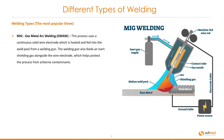We're going to be looking at the most popular three types of welding. Let's start with MIG. MIG stands for Gas Metal Arc Welding or GMAW. This process uses a continuous solid wire electrode which is heated and fed into the weld pool from a welding gun. The welding gun also feeds an inert shielding gas alongside the wire electrode which helps protect the process from airborne contaminants.